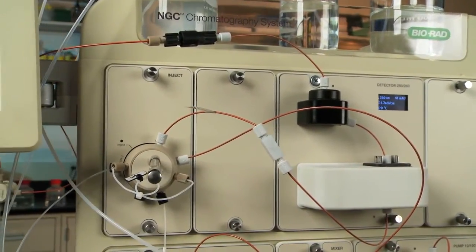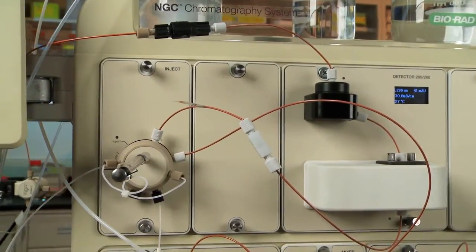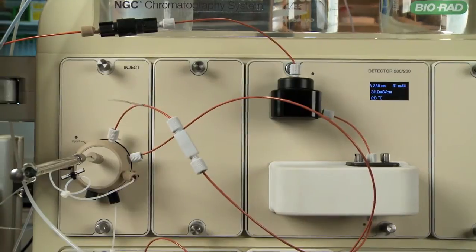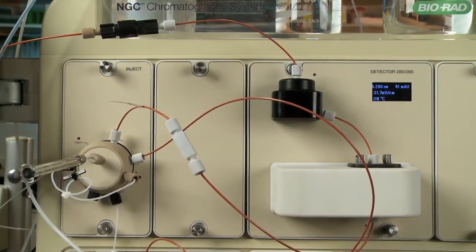Before attaching a column, ensure the plumbing is attached as recommended in the instruction manual. In addition, make sure the pumps are primed with the correct buffer and all lines are purged of air.